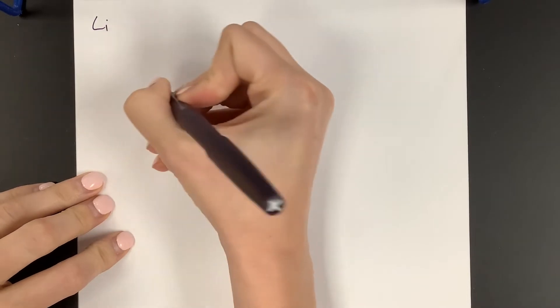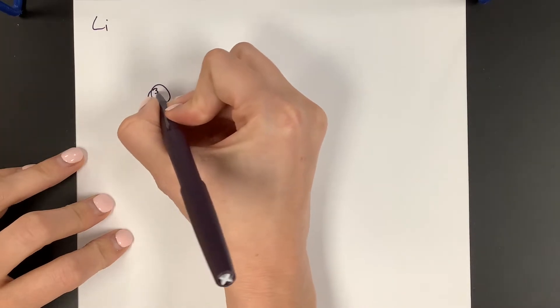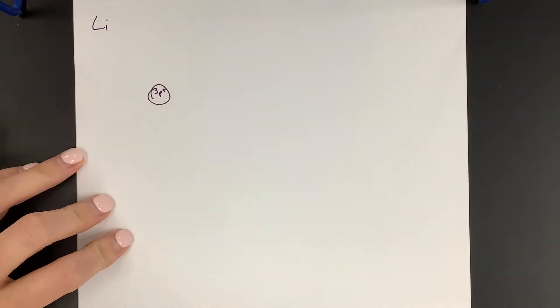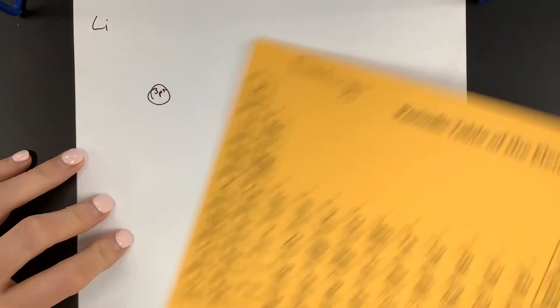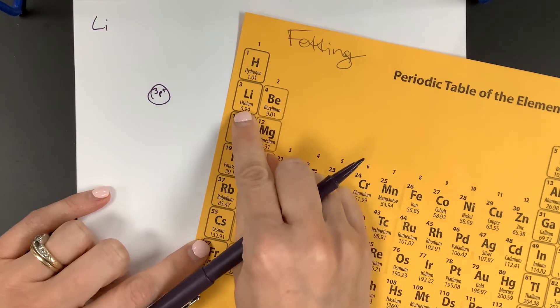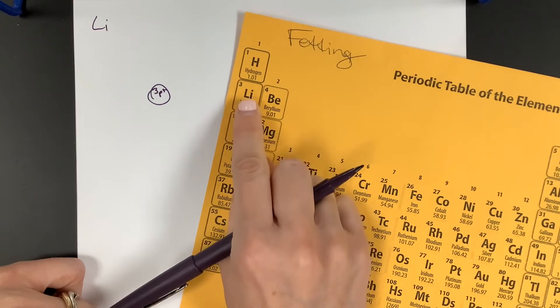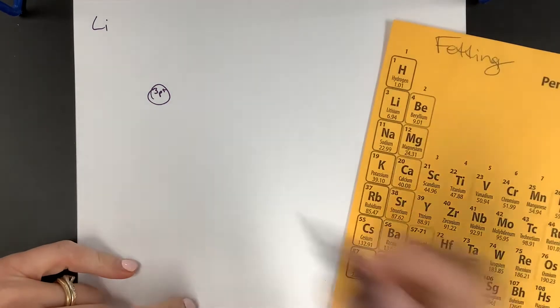First thing we're going to do is we're going to do the nucleus. How many, what, or what two subatomic particles go in the nucleus? Okay. How many protons does lithium have? How many protons does lithium have? Three, the atomic number is three, so there's three protons. Right there. Atomic number three, so there's three protons. Atomic mass is seven. We're rounding to the nearest whole number. So if the atomic mass is seven and three of them are protons, how many of them are neutrons? So there's four neutrons.